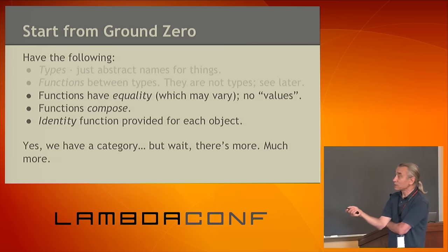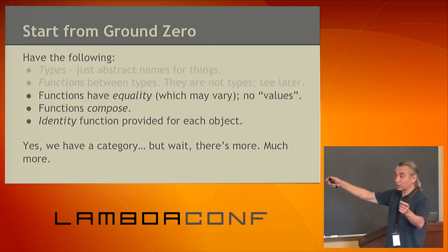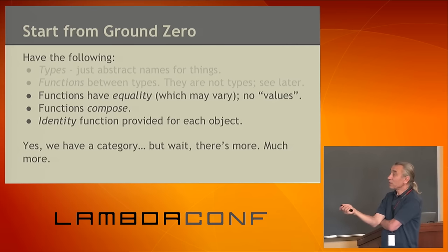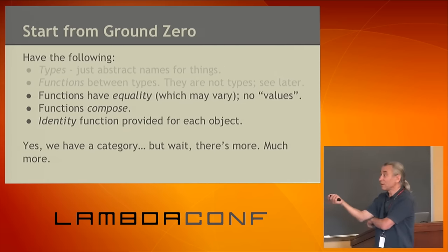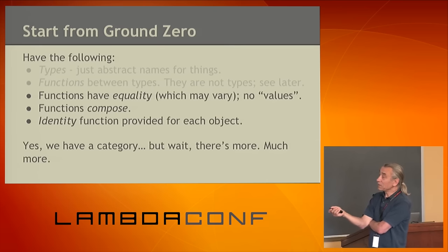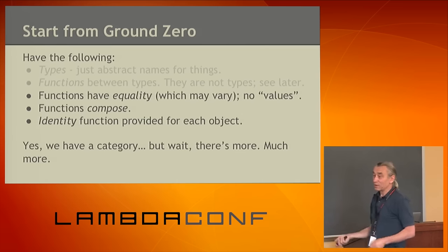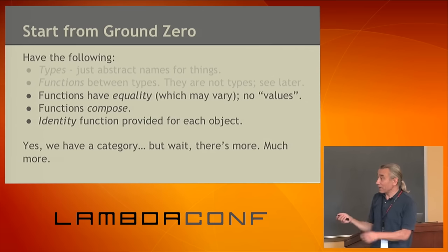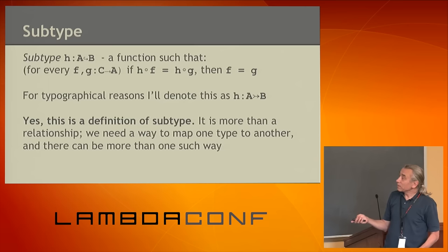Functions can compose: given a function from A to B and a function from B to C, there is a composition from A to C. For each type there is an identity, and identity composed with any function keeps that function — left and right composition. So we have a category. Let's see what else we need.